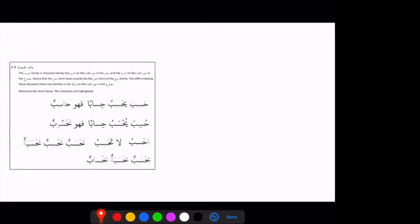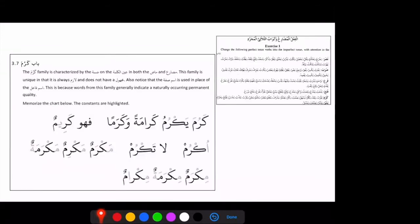Al-Amru minhu, Ihsib. Va-Nahiyanhu, La-Tahsib. Va-Zarfuanhu, Mahsabun, Mahsibun, and Mahsabatun. And then Isam-Ala is Mihsabun, Mihsabatun, and Mihsabun. So this is how Bab-Hasiba work.